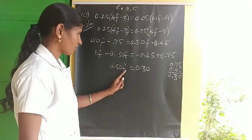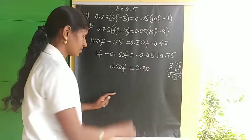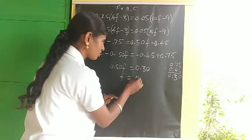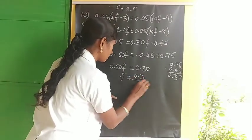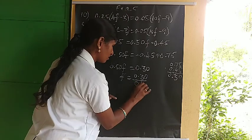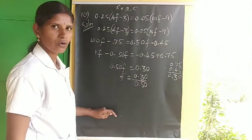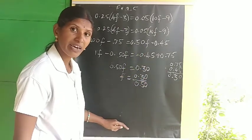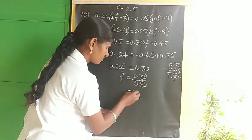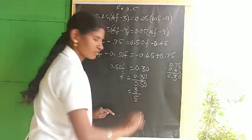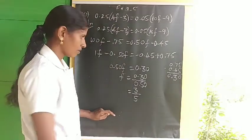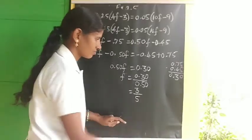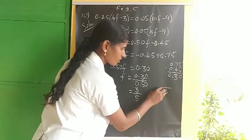Now F equals 0.30 divided by 0.50. Multiply both numerator and denominator by 100 to remove decimals: this gives 30 divided by 50, which simplifies to 3 by 5. In 30, there are six 5s, so 30 divided by 5 equals 6. After placing the decimal, the answer is 0.6.